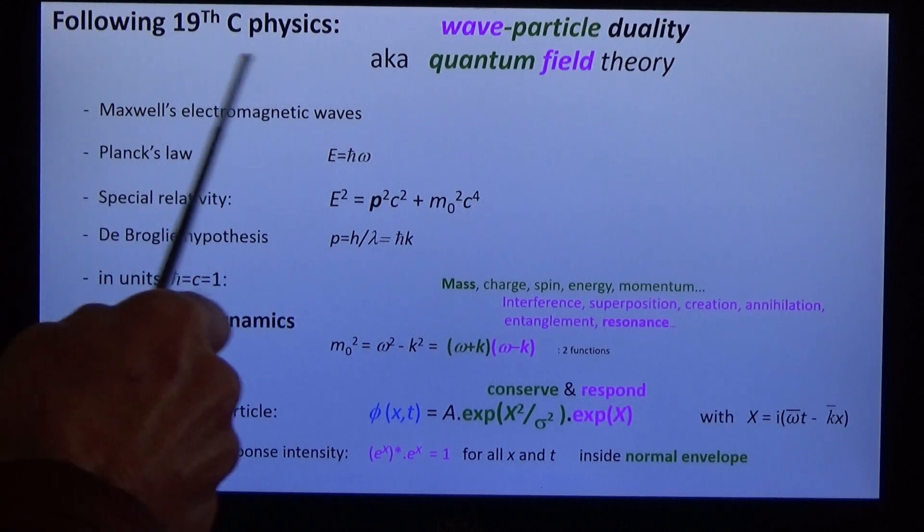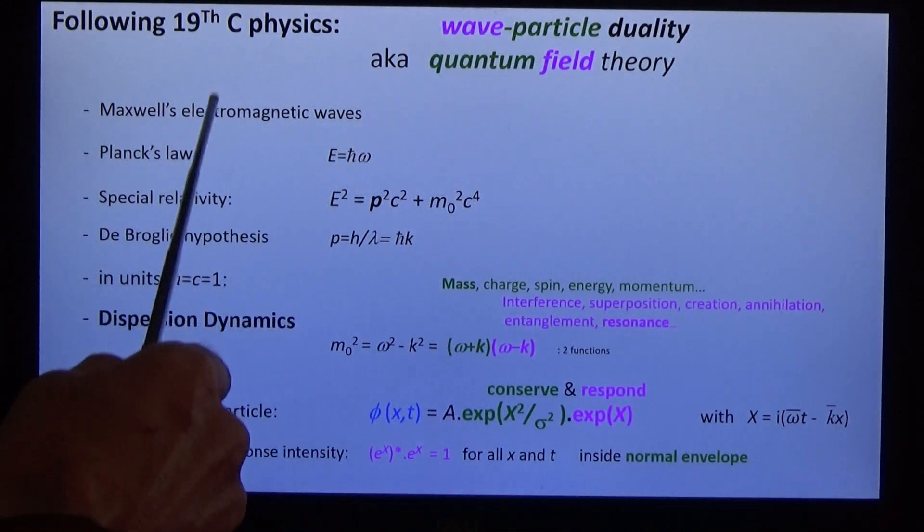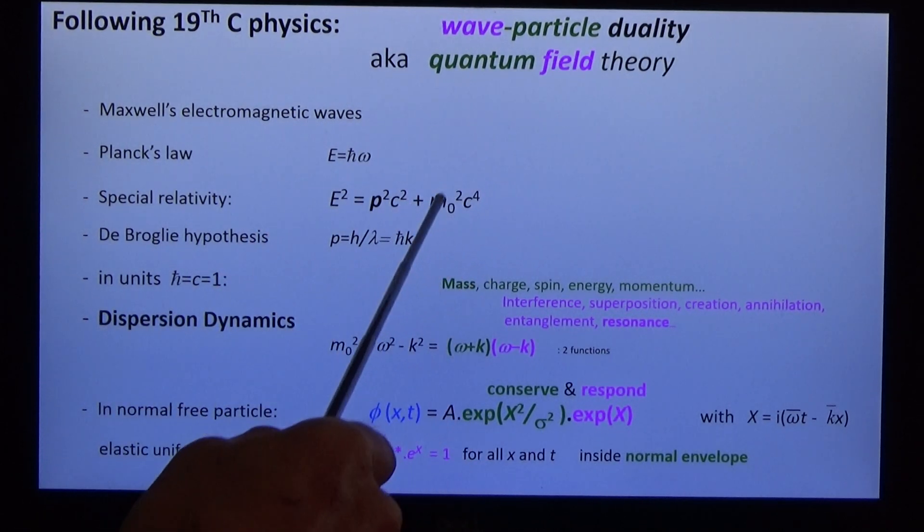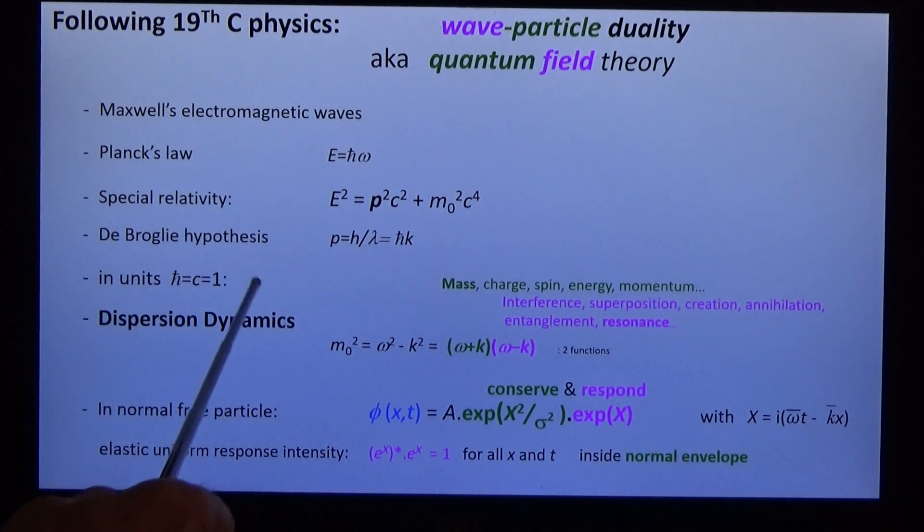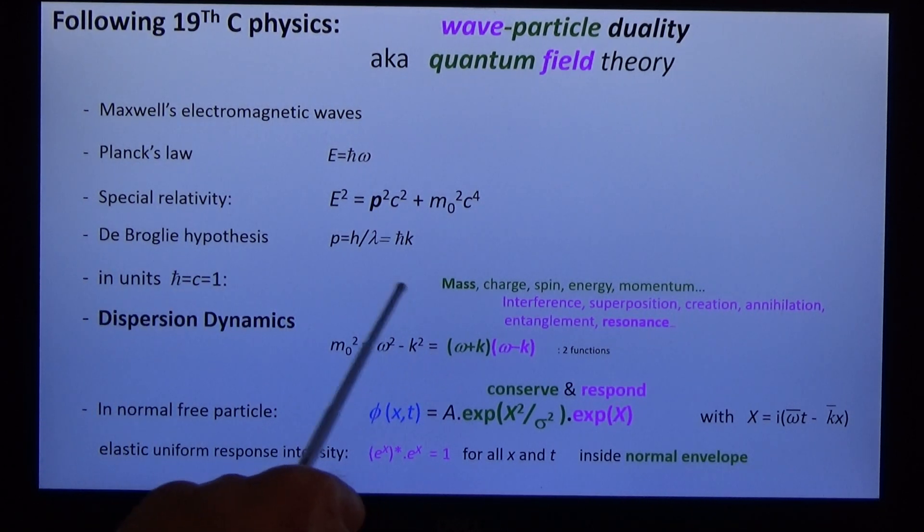We start with 19th century physics, wave-particle duality, include Maxwell's electromagnetic waves, Planck's law, Einstein's special relativity, de Broglie's hypothesis, and simplify the units to find a very simple equation in dispersion dynamics.